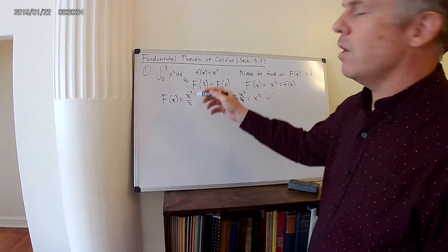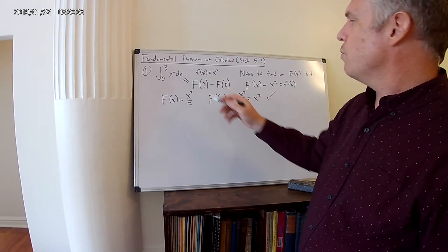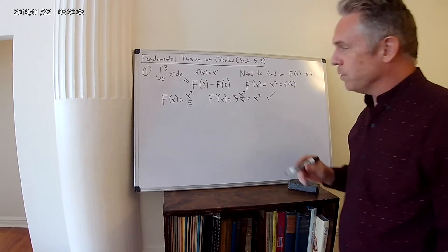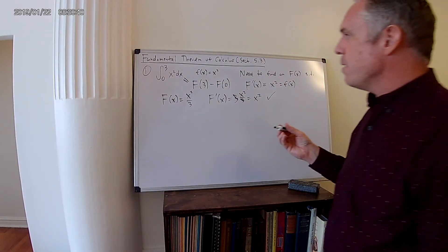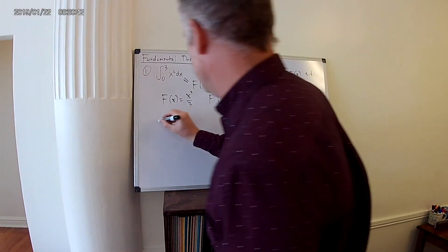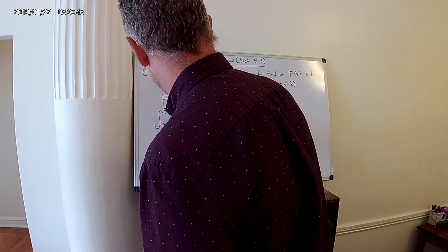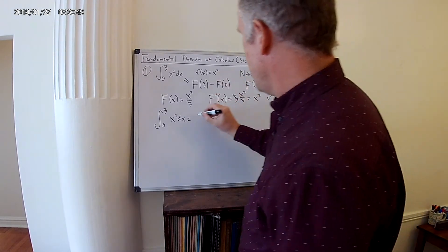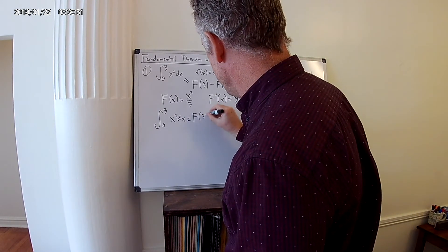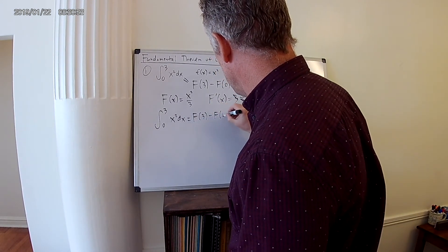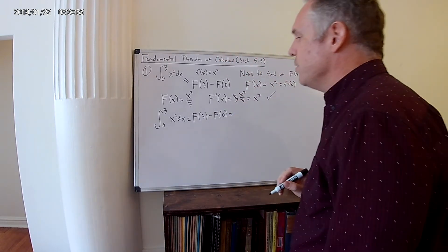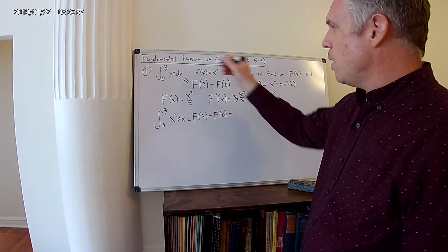So yes, indeed I found, I was clever, and I found a function whose derivative is equal to x squared. By the fundamental theorem of calculus, then, the integral from 0 to 3 of x squared dx will simply equal capital F(3) minus capital F(0), where capital F is the antiderivative of small f(x).